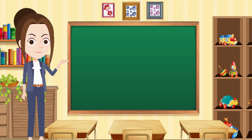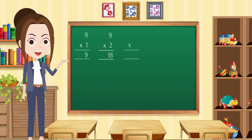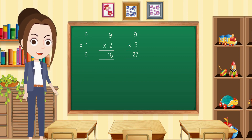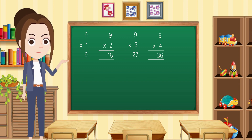Now we will learn the multiples of nine. Nine multiply by one: nine. Nine multiply by two: eighteen. Nine multiply by three: twenty-seven. Nine times four: thirty-six. Nine times five: forty-five.